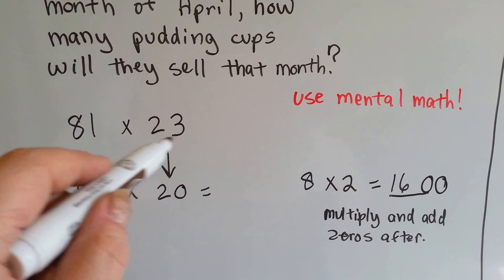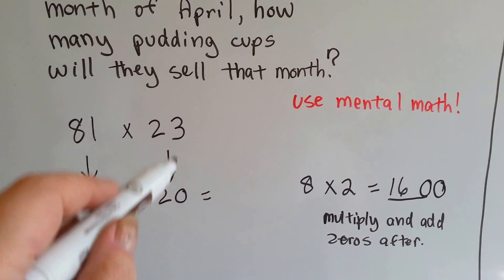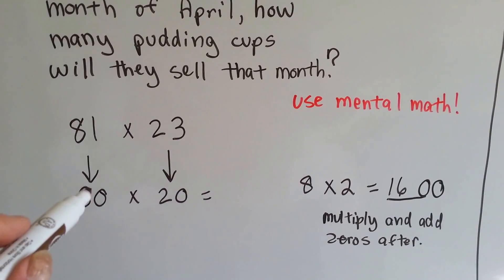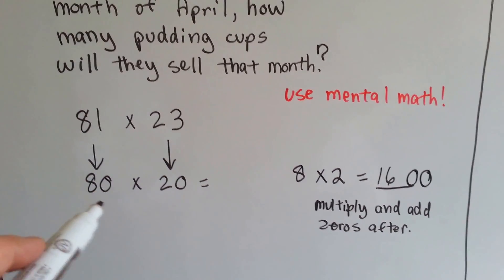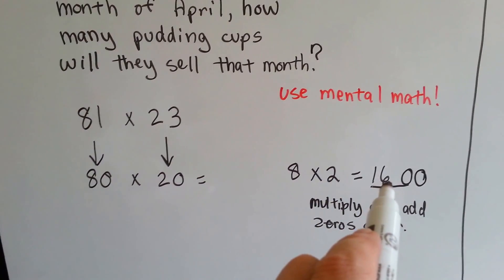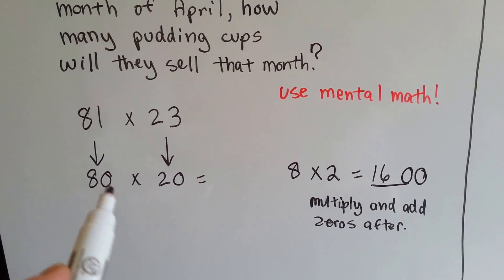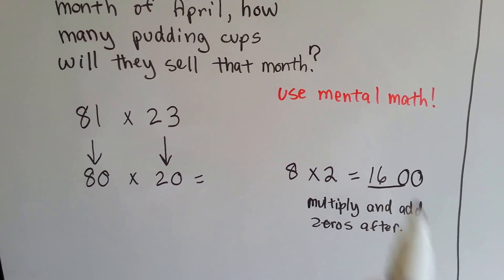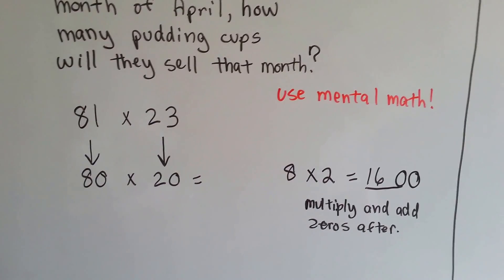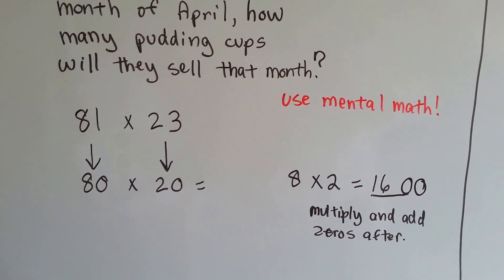Twenty-three, the three tells the two to stay the same, and it becomes a zero, so we've got twenty. Now you've got eighty times twenty. We do eight times two, which is sixteen, and then we add the zero from the eighty and the zero from the twenty, and we get one thousand six hundred. Isn't that easy?